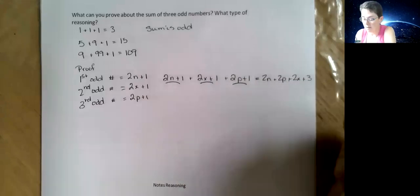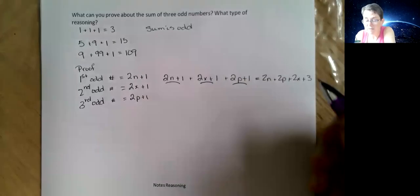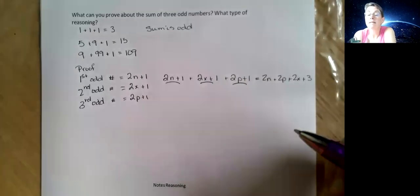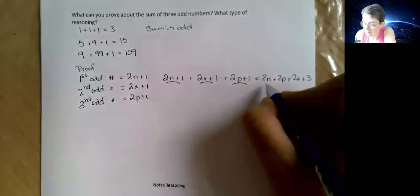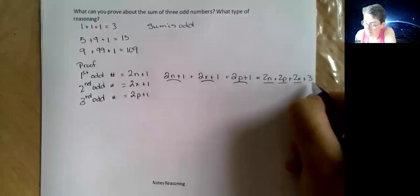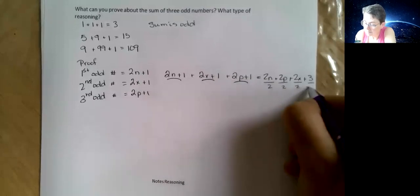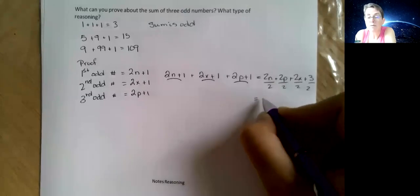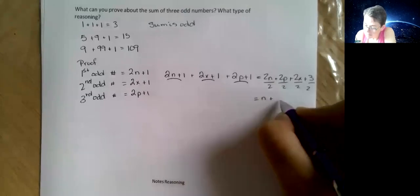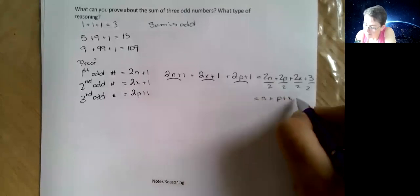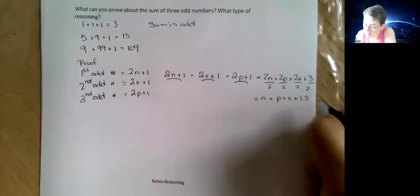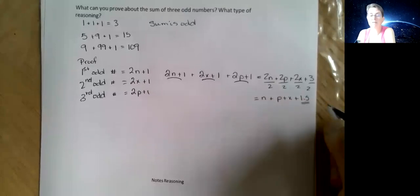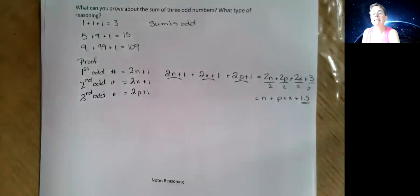So what do we get? 2n plus 2p plus 2x plus 3. I just flip them so they're in alphabetical order there. And I want to prove it's odd. Well, whether you're proving it's odd or even, you're always going to divide through by 2, so that's going to give you n plus p plus x plus 1.5.